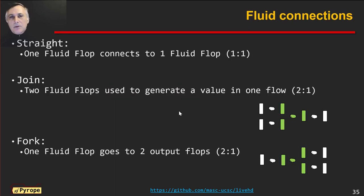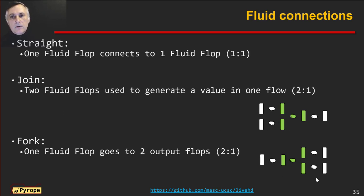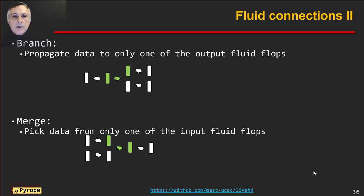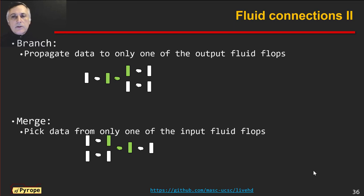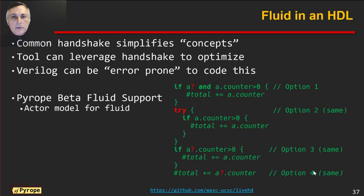Straight flow is simple and boring. It's more interesting when you have a join, a fork where you receive a value and send to two outputs, a branch, or a merge. For each one of those patterns we have different constructs in the language to help.